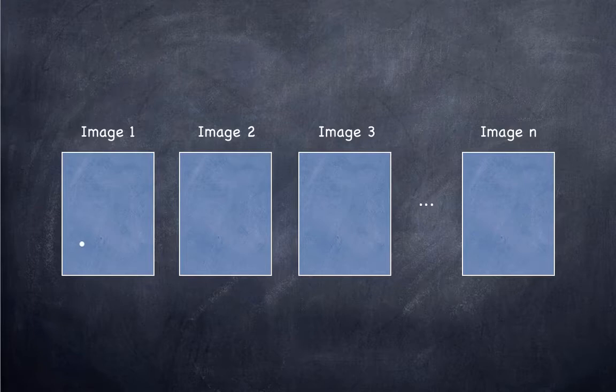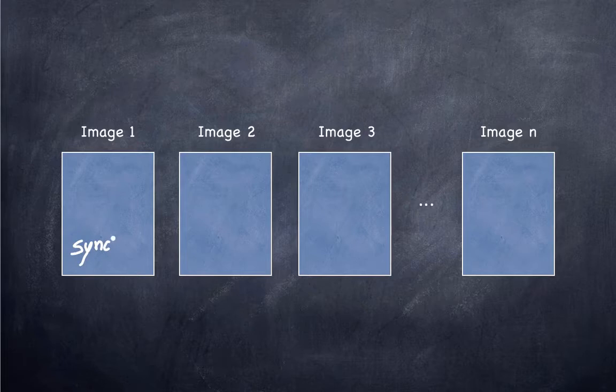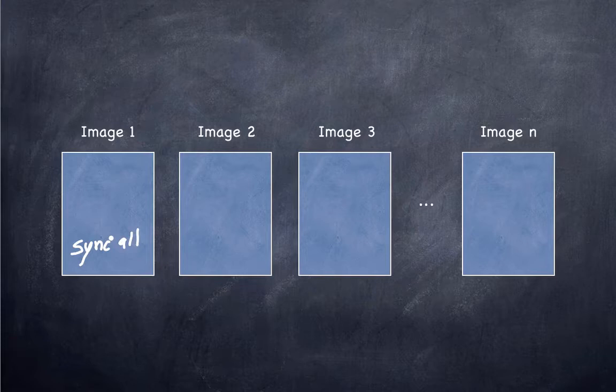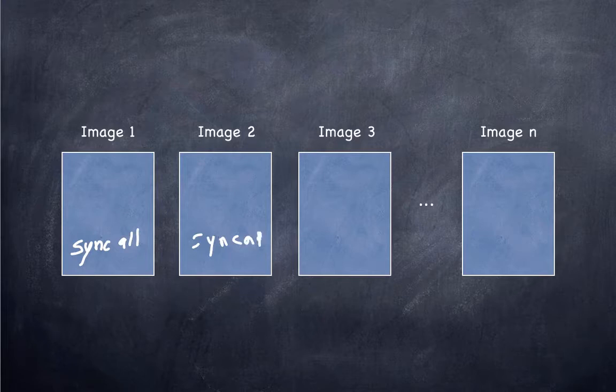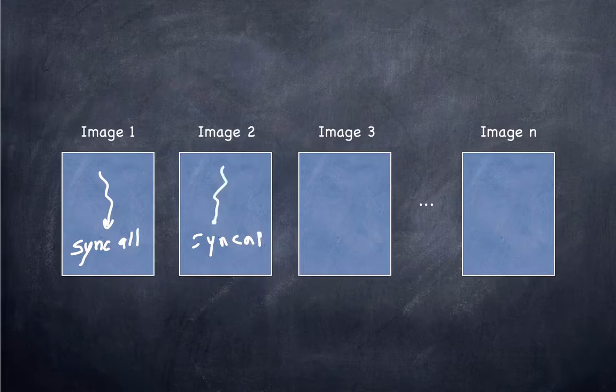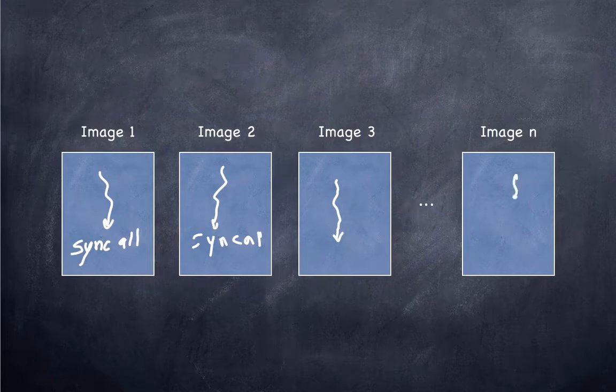And each image then goes along on its merry way until it encounters some form of synchronization. That could be a statement like a sync all that would be replicated across all of the images. And only at that point do the images actually synchronize with each other. Synchronizations also happen when there's a memory allocation or deallocation.